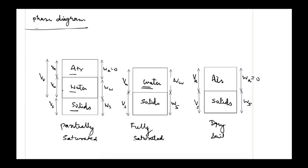Let's start with soil mechanics, beginning with soil-water relationships. The very first concept is the phase diagram, which is a way of representing the soil mass. In this diagram, the bottom represents solids, above that is water, and above that is air. On the left-hand side we denote the volume of all constituent parameters, and on the right-hand side we show the weight of the parameters.